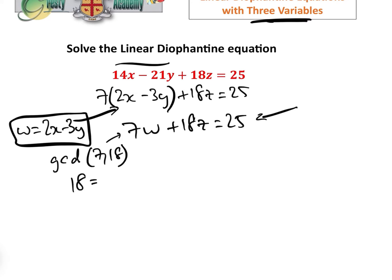We need to find the GCD of 7 and 18, which clearly is one. But let's go through the motions. We need to go 18 equals 7 times 2 plus 4. Then 7 equals 4 times 1 plus 3. And then 4 equals 3 times 1 plus 1. The fact that the remainder here is 1 means that the GCD of 7 and 18 is 1.